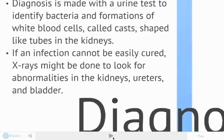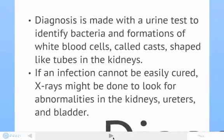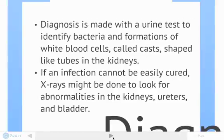Let's move on to the diagnosis of pyelonephritis. The diagnosis is made with a urine test to identify bacteria and formations of white blood cells called casts, which are tube-shaped and found in the kidneys. If an infection cannot be easily cured, x-rays might be done to look for abnormalities in the kidneys, the ureters, and the bladder.